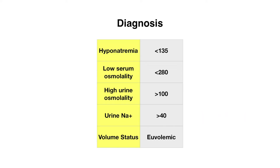So how do we diagnose SIADH? SIADH will typically present with hyponatremia, which is less than 135, a low serum osmolality which is less than 280, a high urine osmolality which will be greater than 100, and a high urine sodium — because the body responds to this increased volume expansion by excreting more sodium in the urine. In terms of volume status, patients with SIADH will be euvolemic.